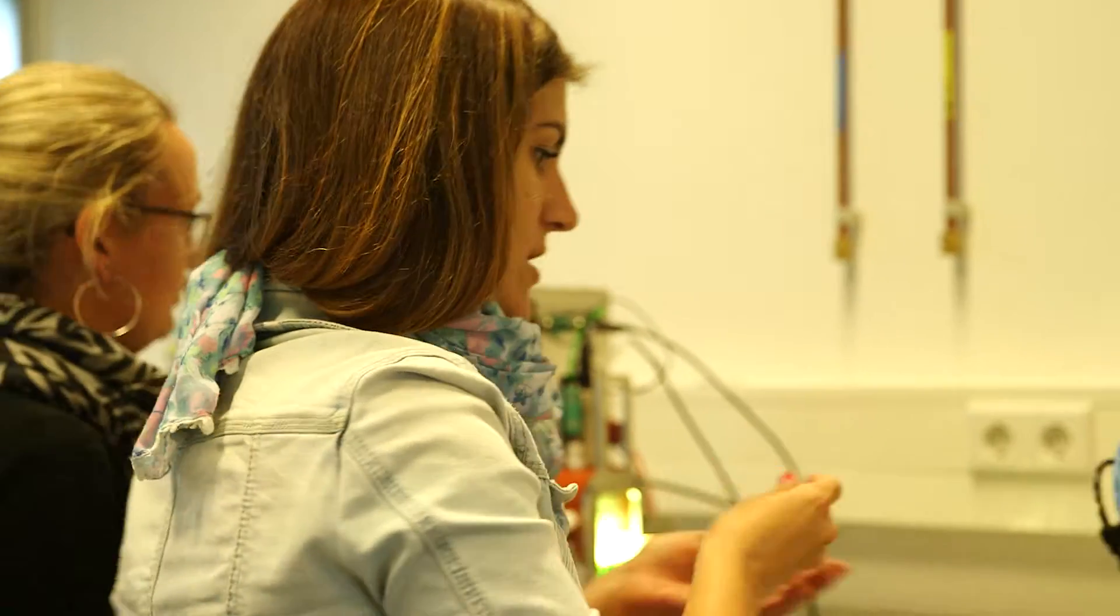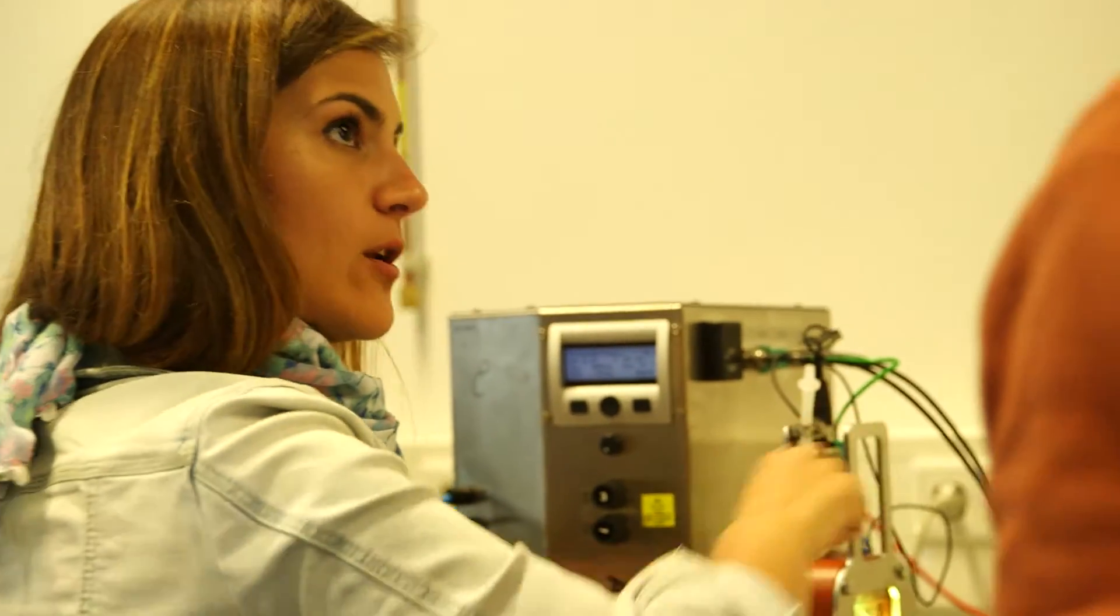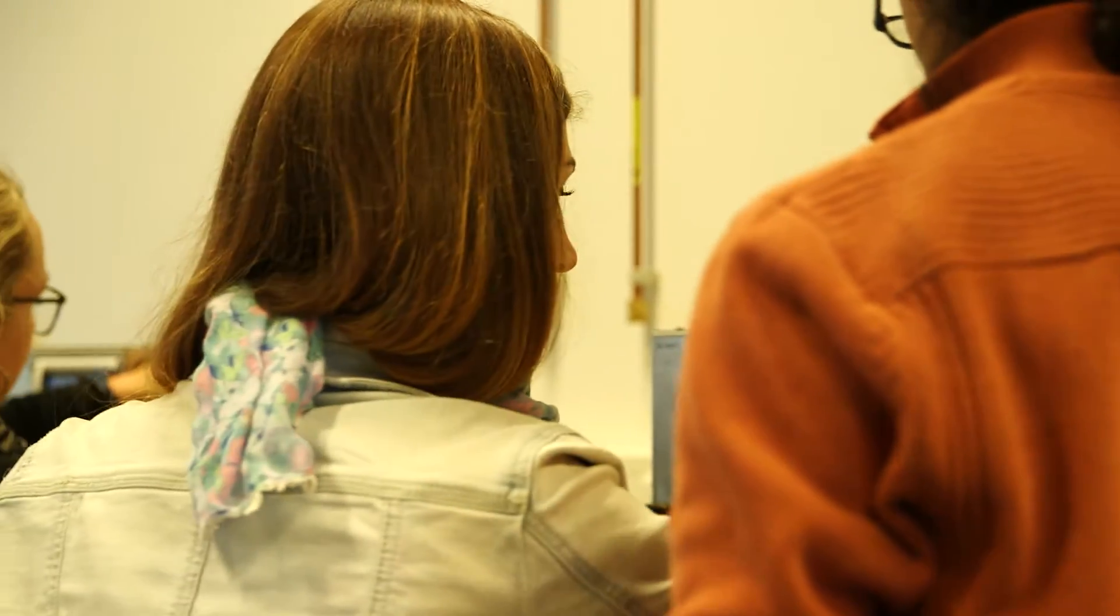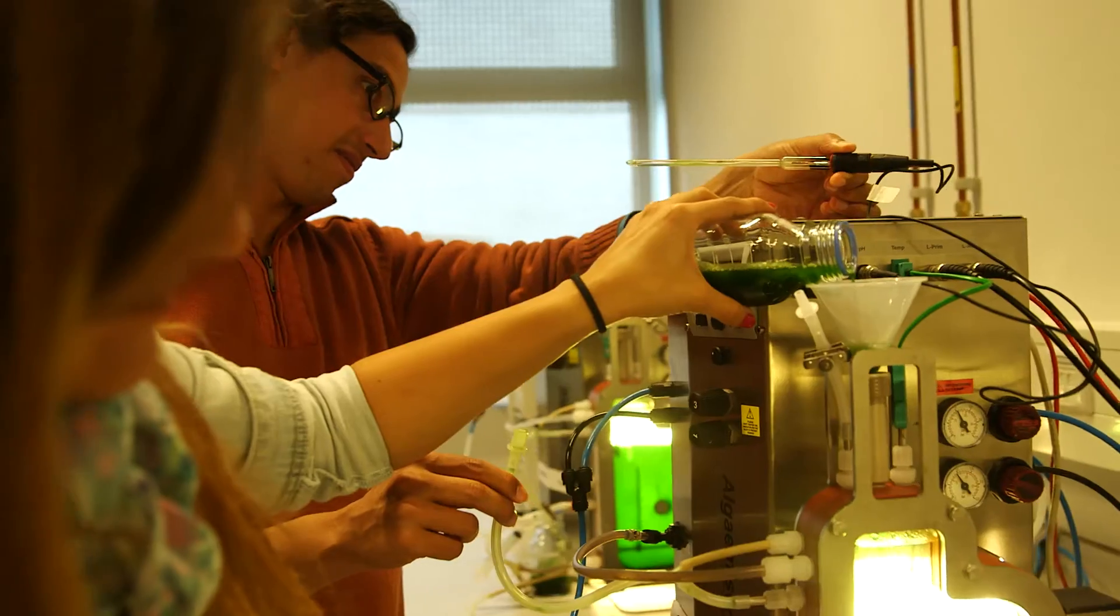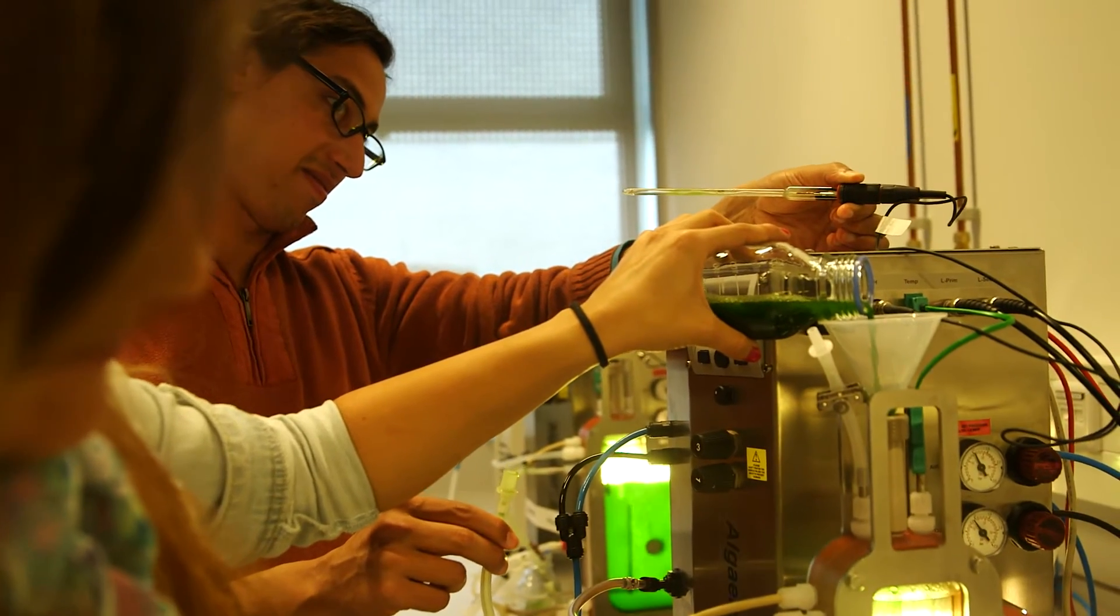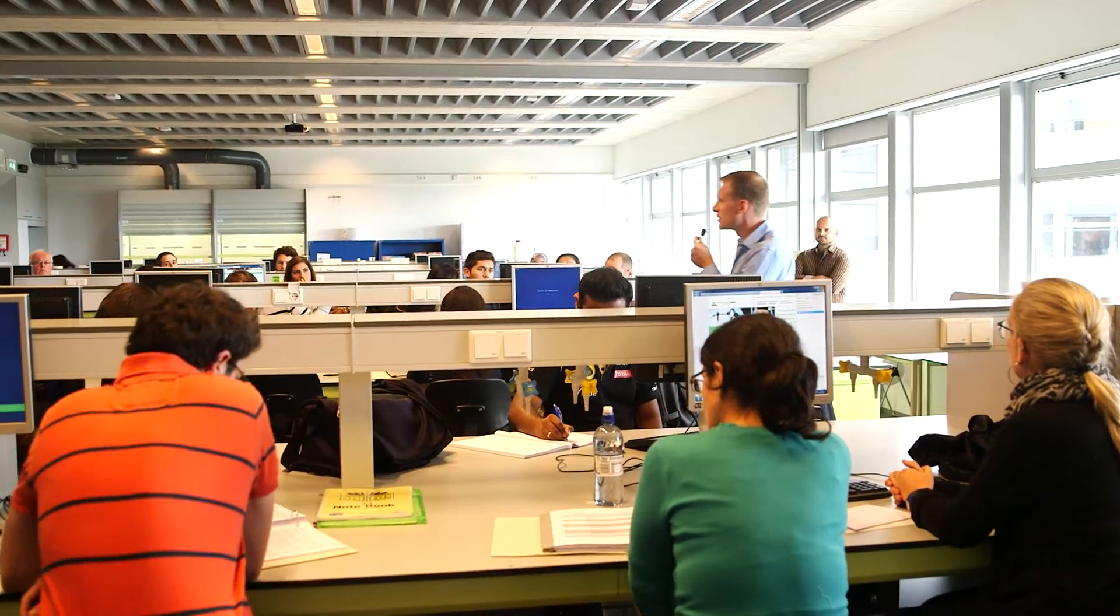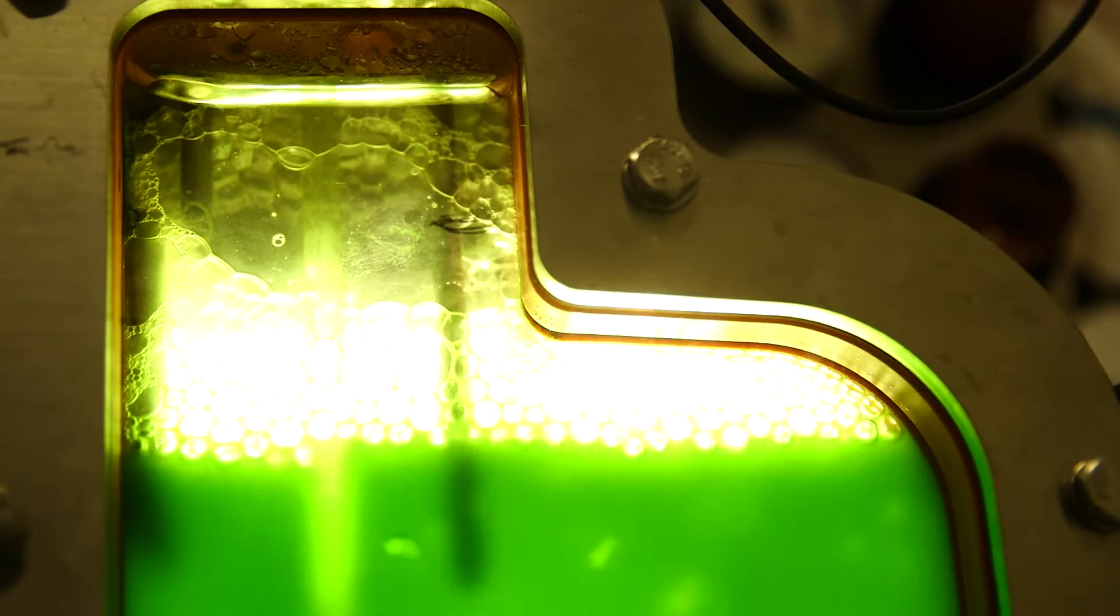We are learning how all the different parameters affect the cultivation process, so we can predict how a change, for example in nutrients or light, will affect the productivity of our production process.